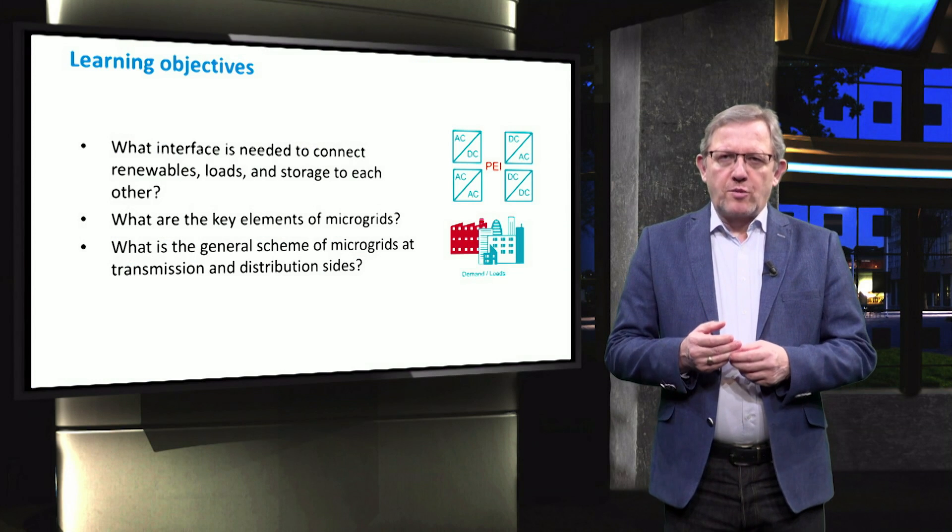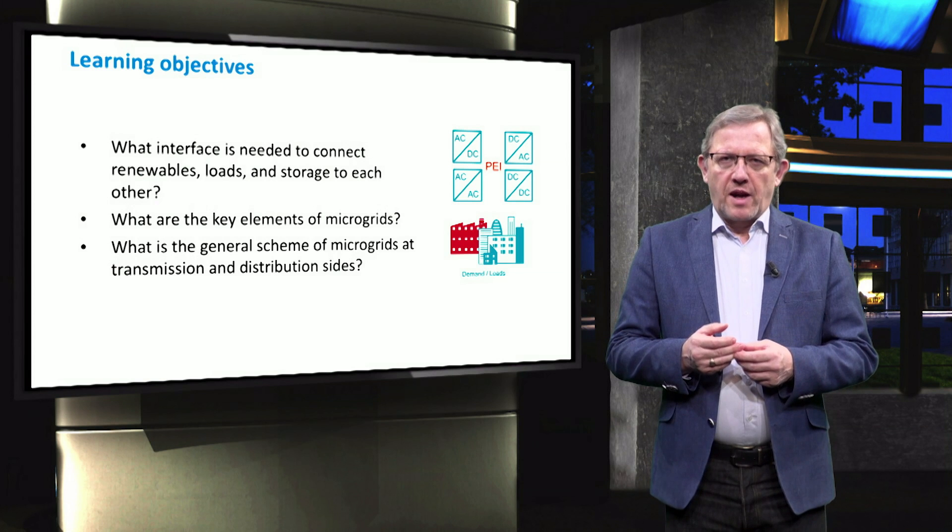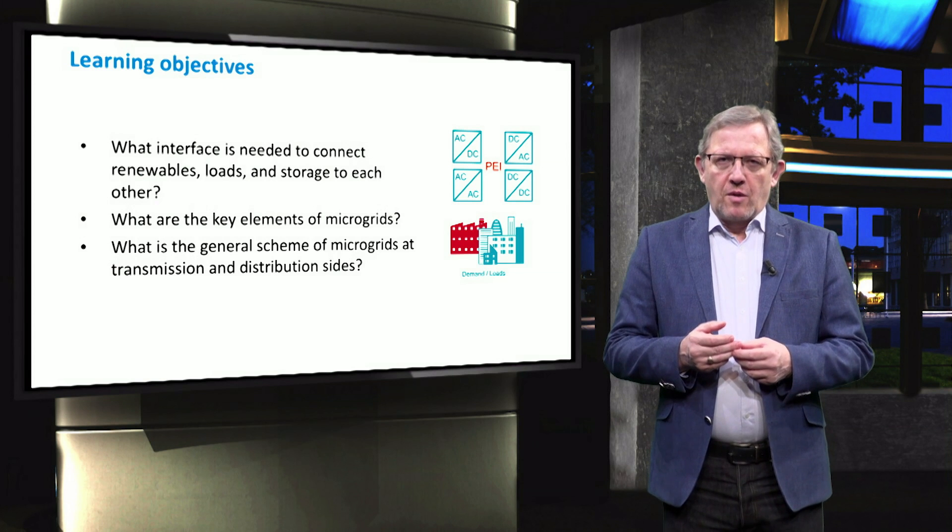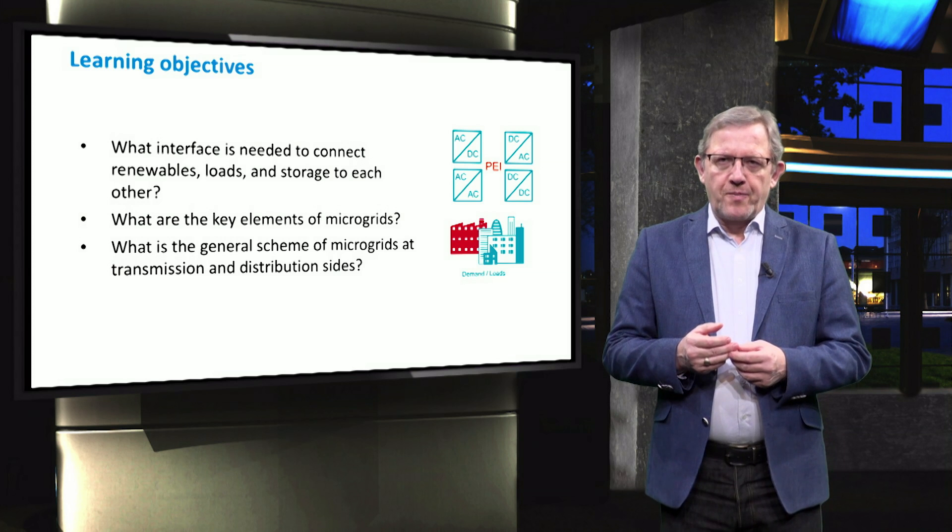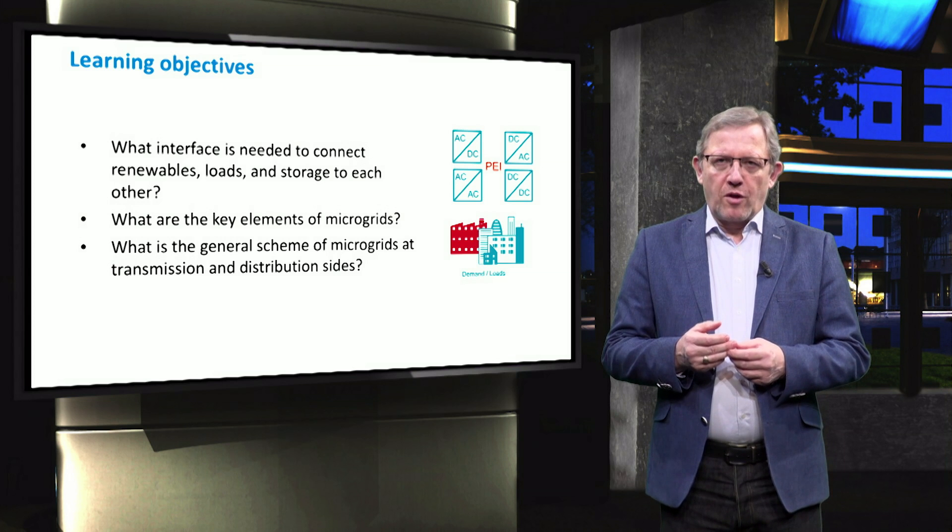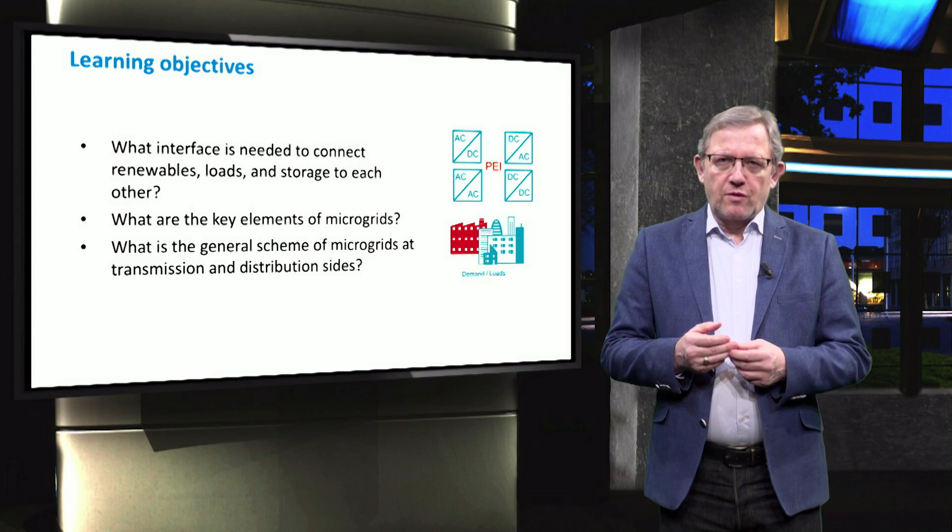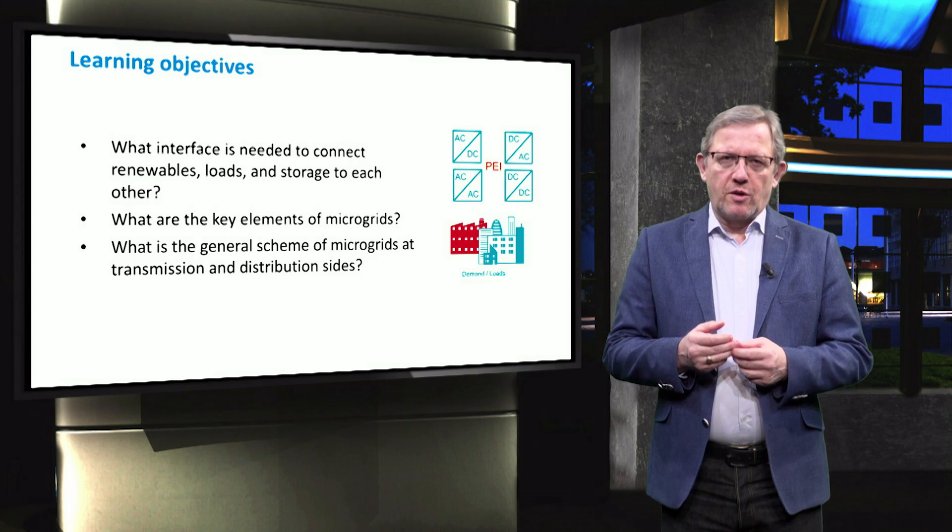The main learning objectives are summarized within three main questions. What interface is needed to connect renewables, loads and storage to each other? What are the key elements of microgrids? But first of all, we need to know the general schemes of distribution and transmission networks.